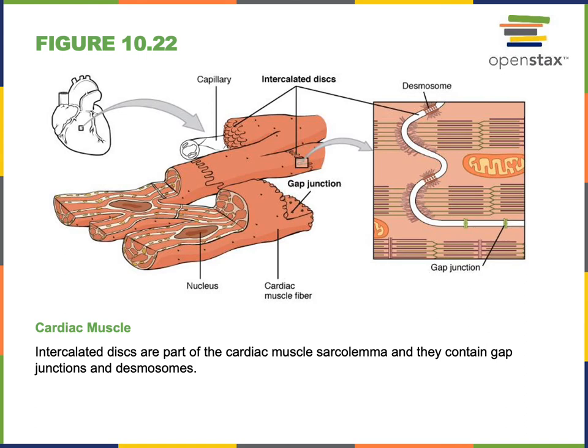Cardiac muscle is under involuntary control. There are local pacemaker cells found within the heart that generate the excitation that spreads through the heart by traveling through gap junctions from one cell to the next to stimulate contraction. Although the contraction mechanism is involuntary and stimulated by that local internal pacemaker, the activity of the heart can still be regulated by the nervous system. The autonomic nervous system provides this involuntary regulation of the heart.